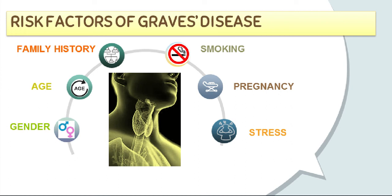While scientists know some people inherit an immune system that can make antibodies against healthy cells, predicting who will be affected is difficult. The peak age is the 3rd and 4th decades, affecting approximately 0.1 to 0.5% of the general population. In children, this is the most common cause of hyperthyroidism, typically affecting young adult females. The male-to-female ratio is 1 to 7, meaning it is 7 times more common in females than in men.